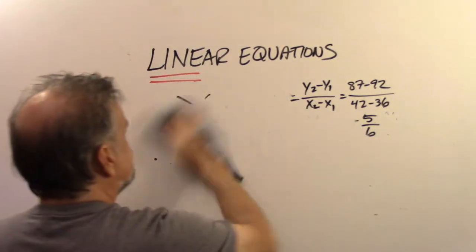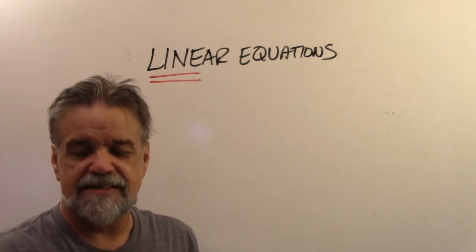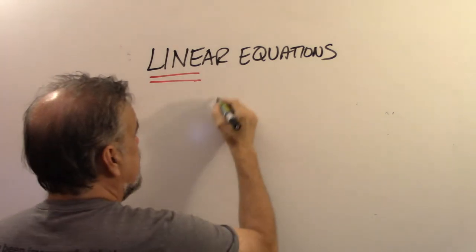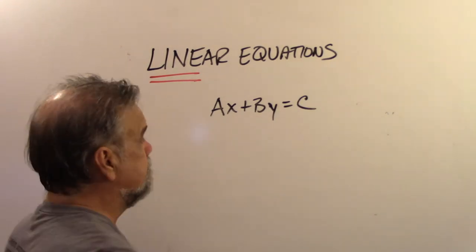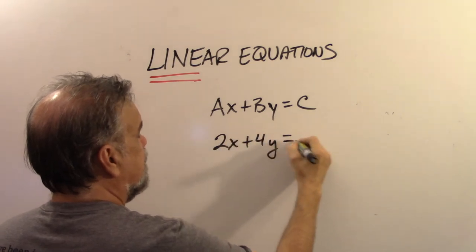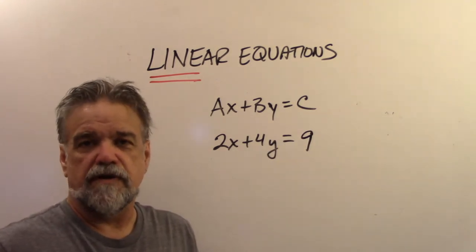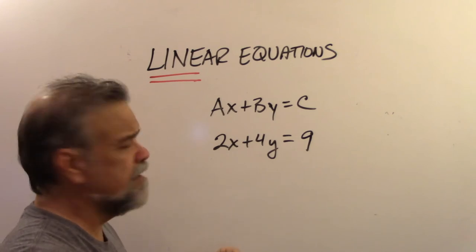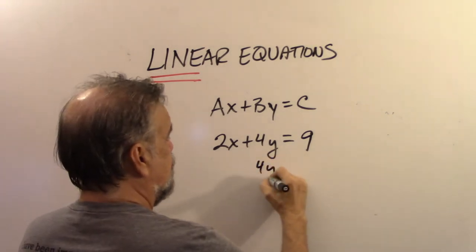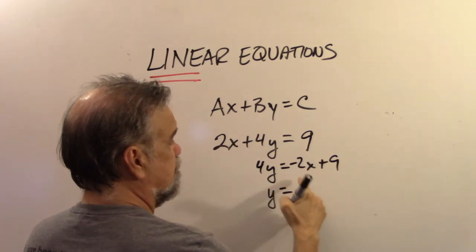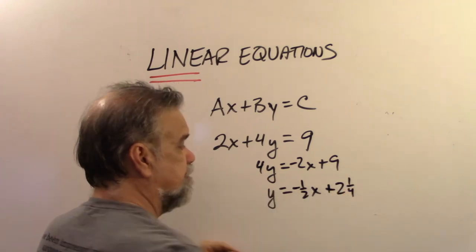There's another form of a linear equation you'll see quite a bit: standard form, which looks like a number times x plus a number times y equals a number — for example, 2x + 4y = 9. To convert to slope-intercept form, just solve for y: 4y = −2x + 9, so y = −1/2 x + 2.25.